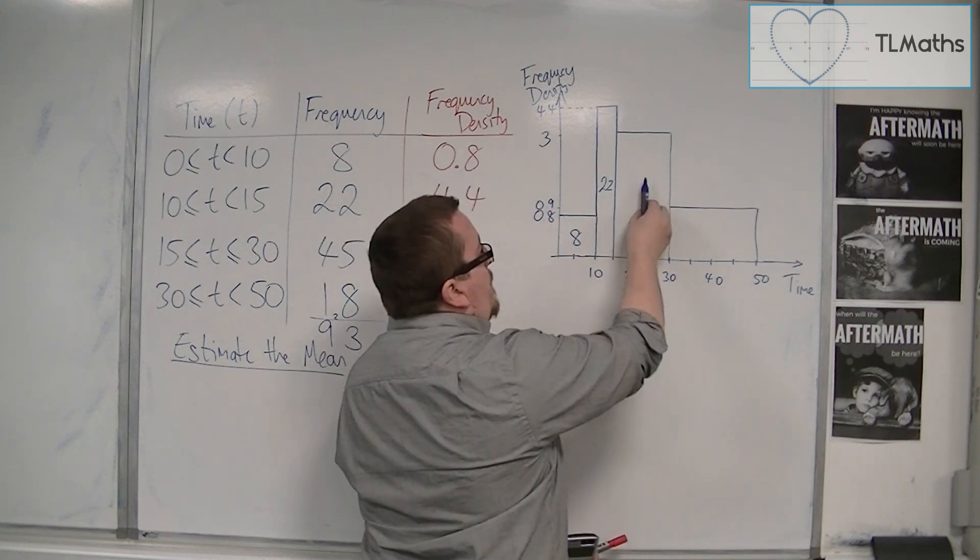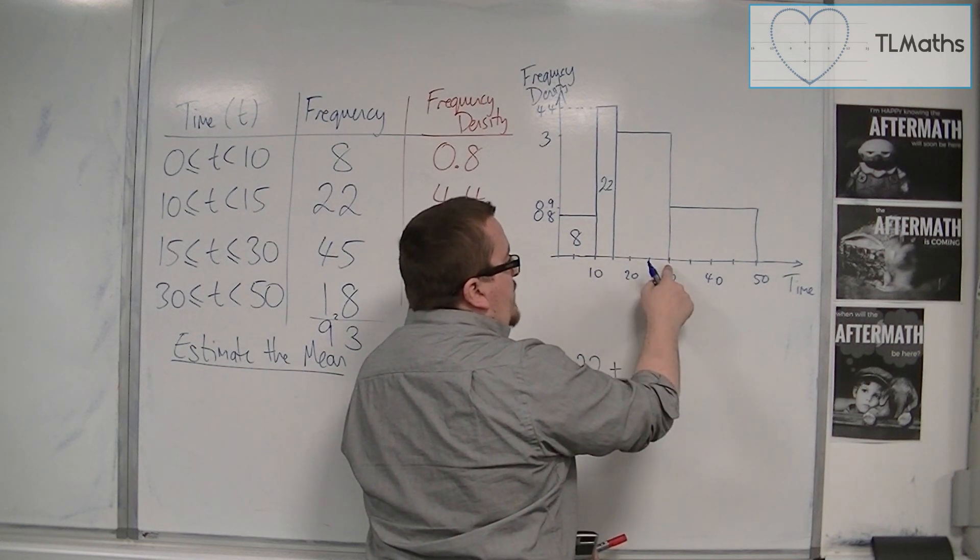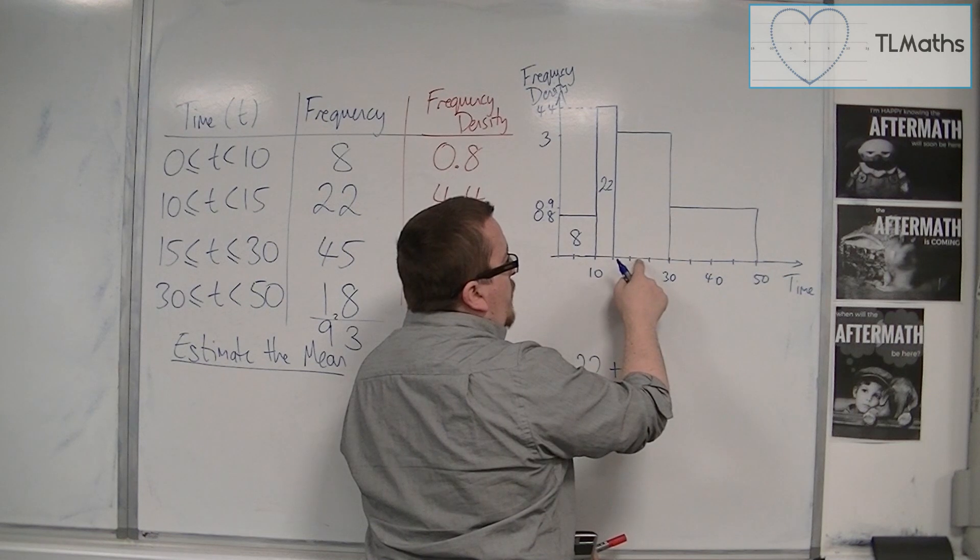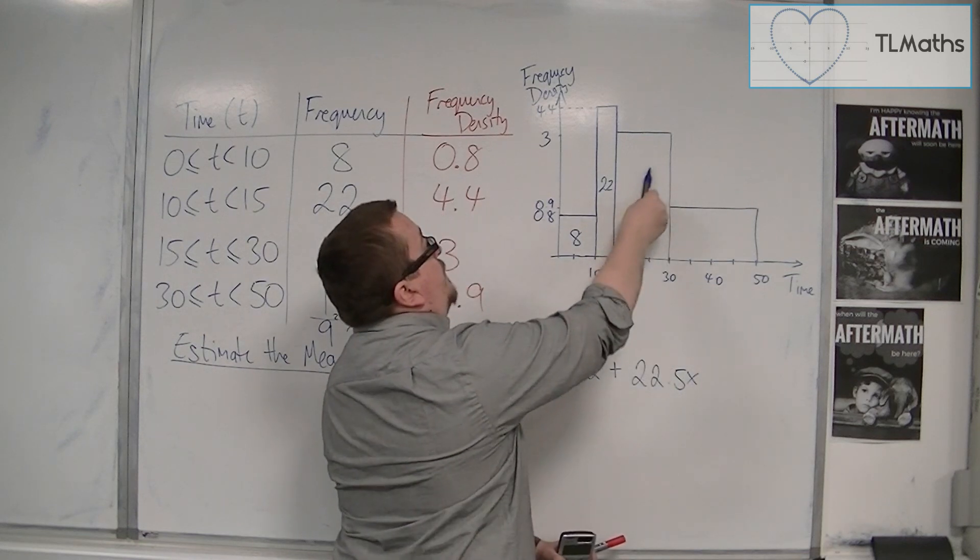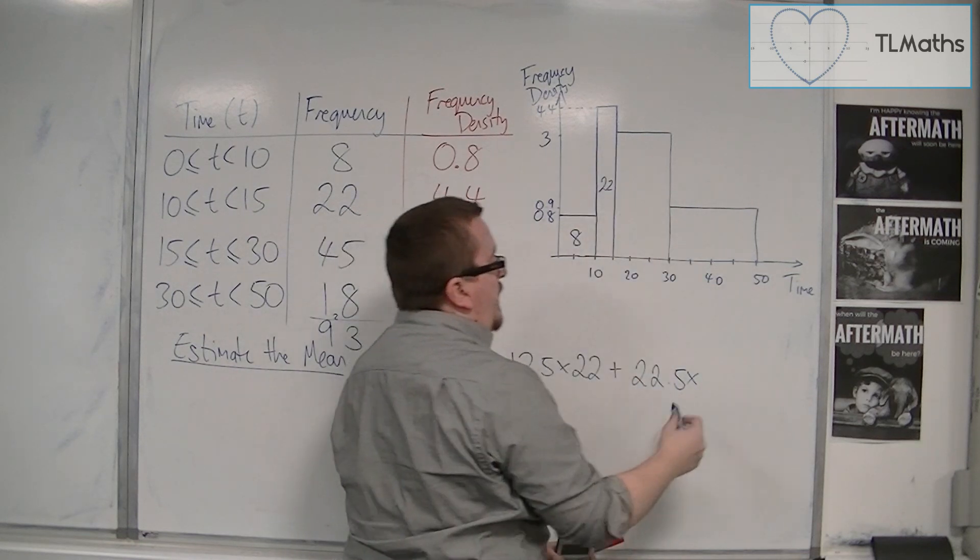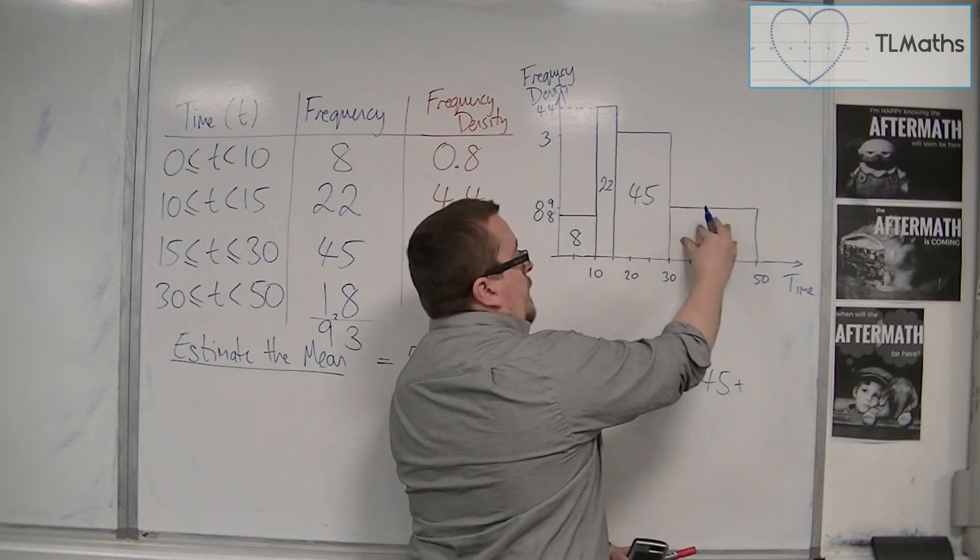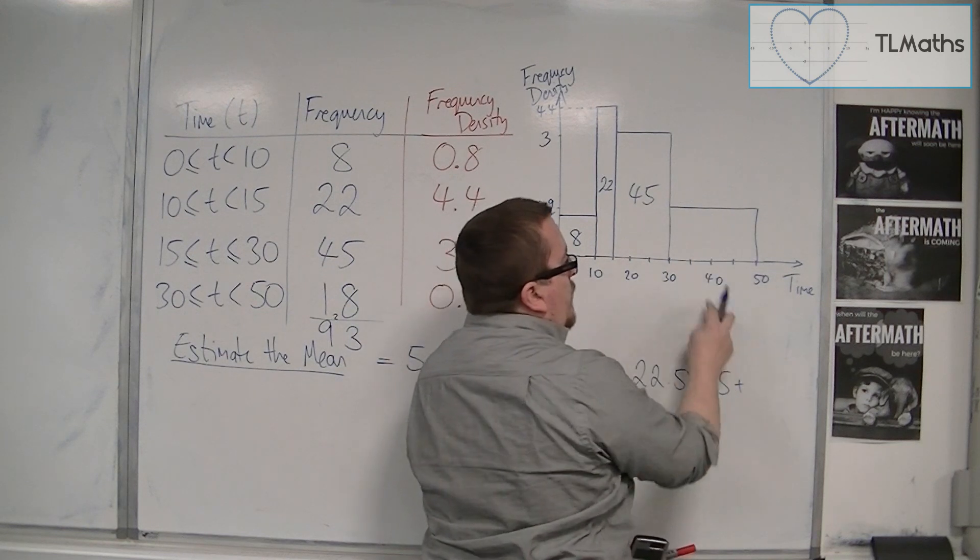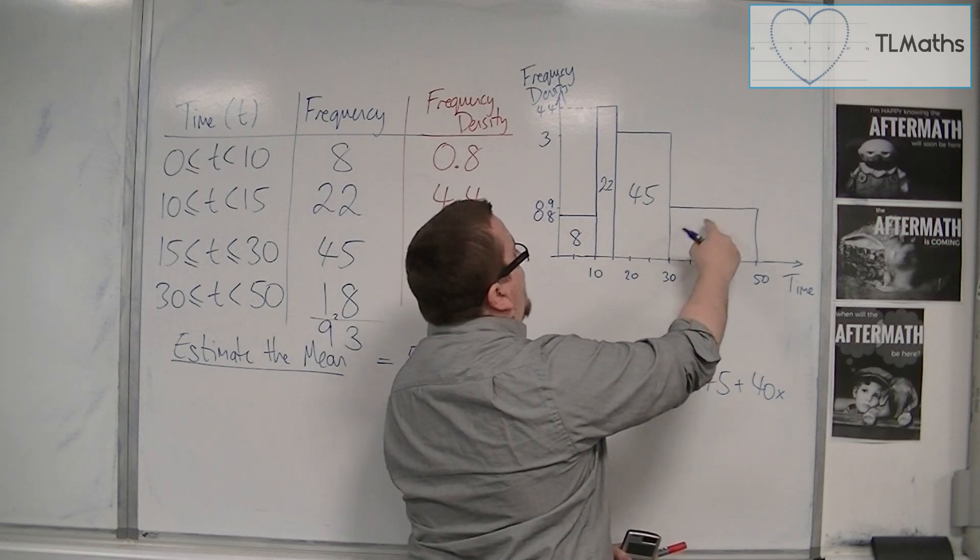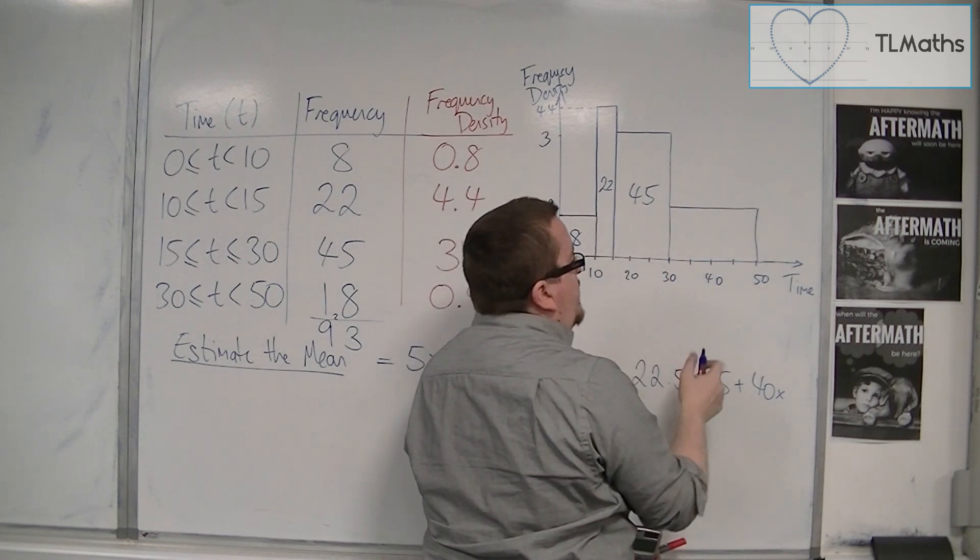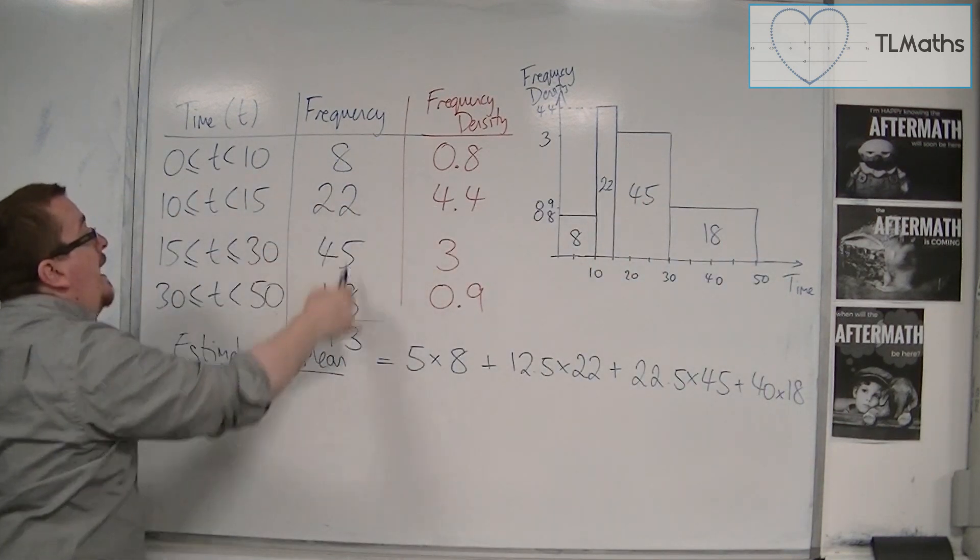Plus, the midpoint of this bar. So, that's 15 to 30. So the midpoint is there. So 22.5. Times by the value of this bar. So 3 times 15. So 45. Plus, the midpoint of this bar, which I can see is 40. And times that by the value of that bar. So 0.9 times by 20. So that gets me the 18. So each of these numbers are exactly what I had as my frequencies.